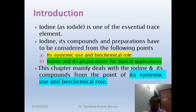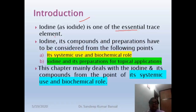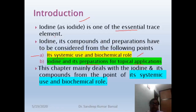As far as iodine is concerned, it is one of the essential trace elements and it is used as iodide salt. Iodide salt or iodine itself — its preparation and its compounds have to be considered from two regions. First is its systemic use and biochemical role, and second is iodine and its preparations for topical application. Iodine preparations are used basically for two purposes: one is systemic and another is topical.